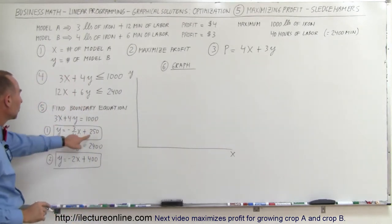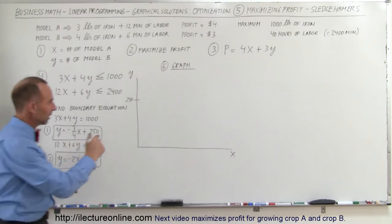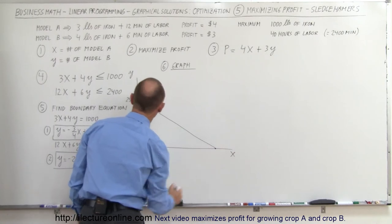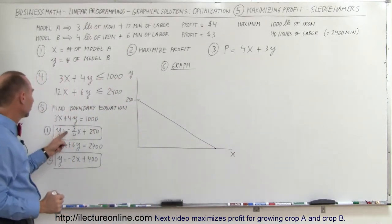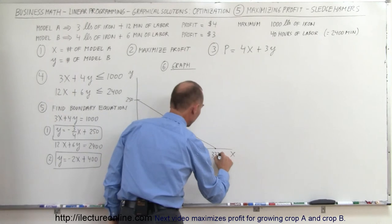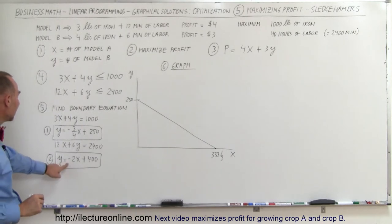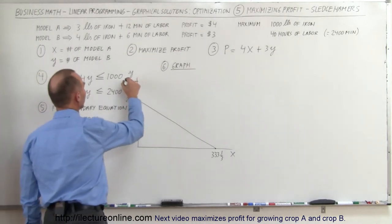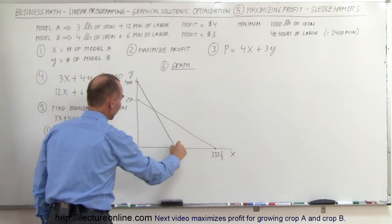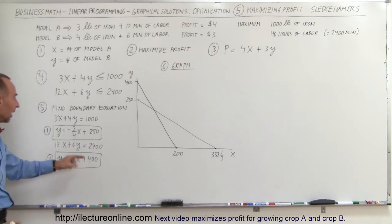Taking my first equation, my Y-intercept is 250 and my slope is minus 3/4. When Y equals 0, three-quarters X equals 250, so X equals 1,000 divided by 3, which is 333 and a third — that's where it crosses the X-axis. My second line has a Y-intercept at 400 and a steeper slope of minus 2, and it hits the X-axis at X equals 200, because when Y equals 0, 2X equals 400.